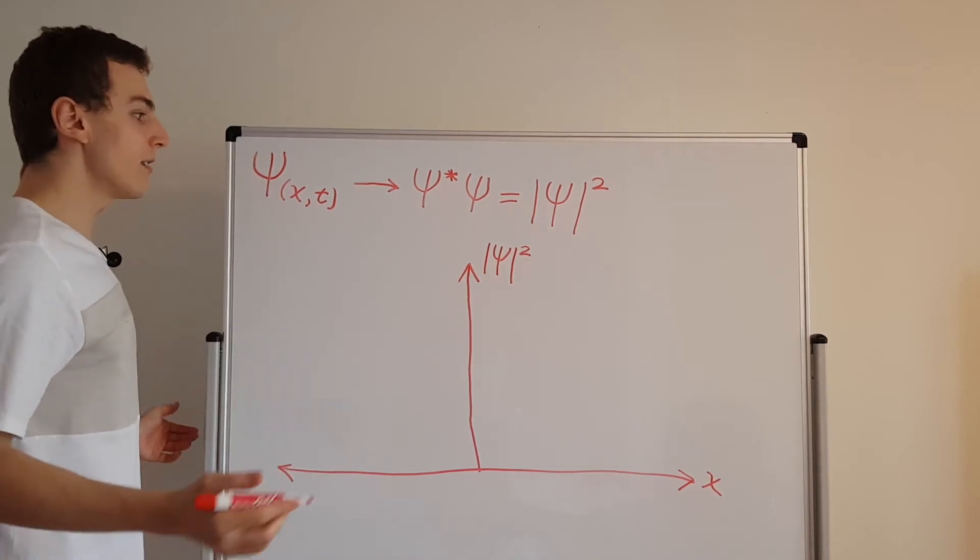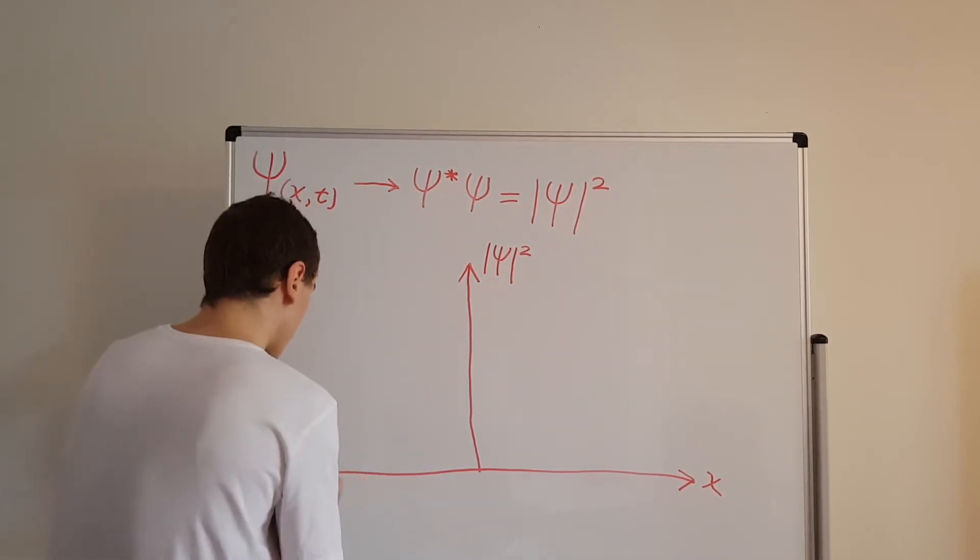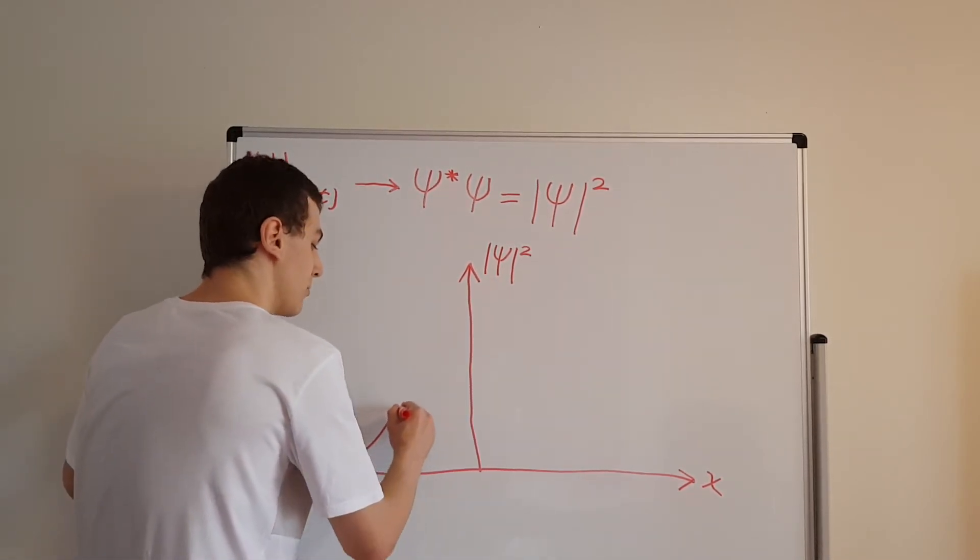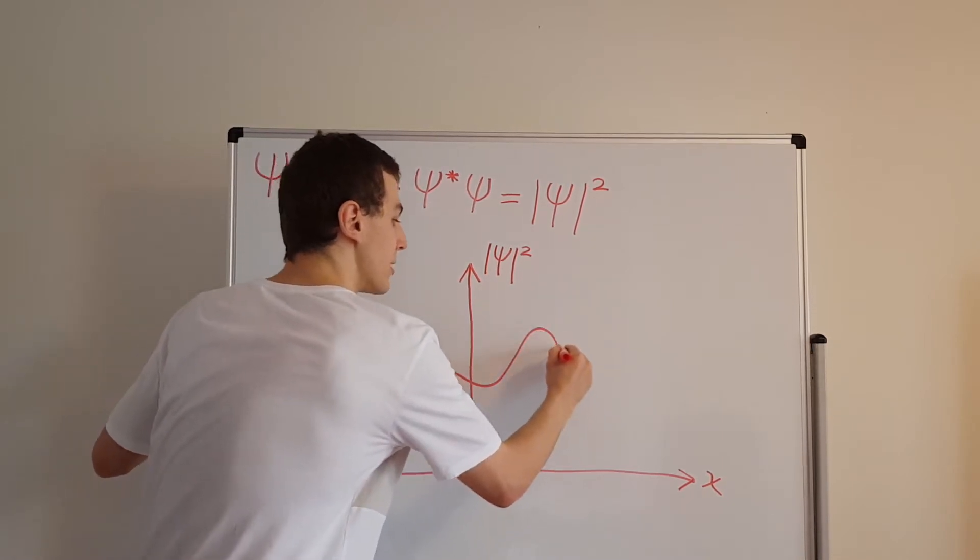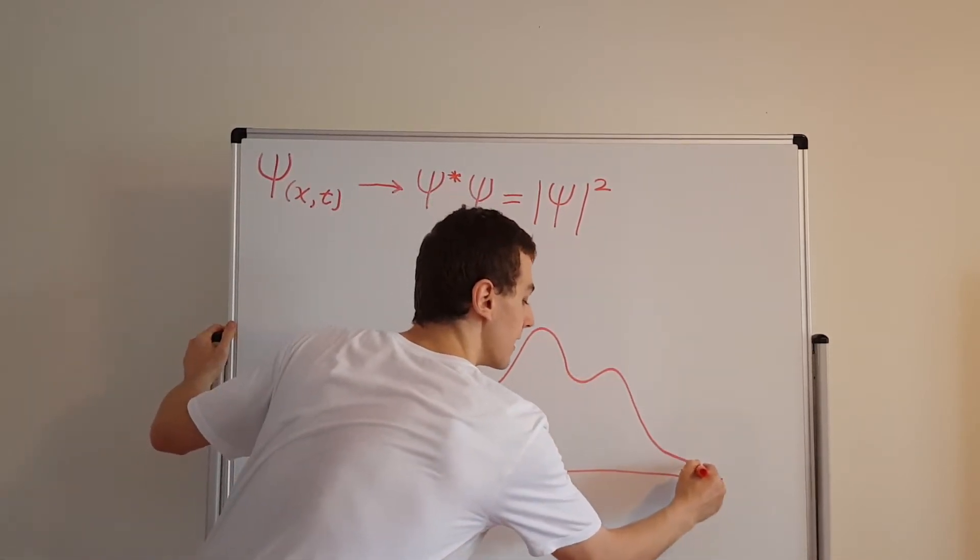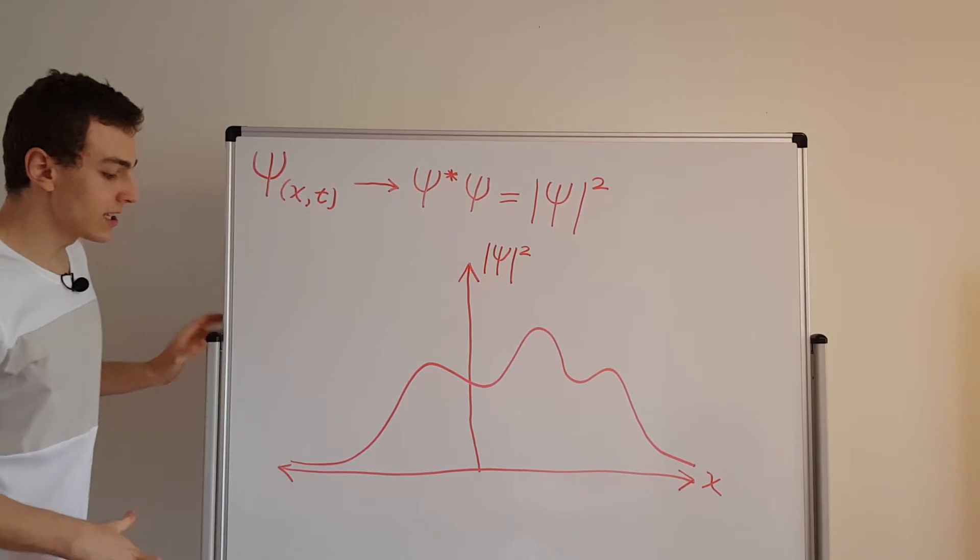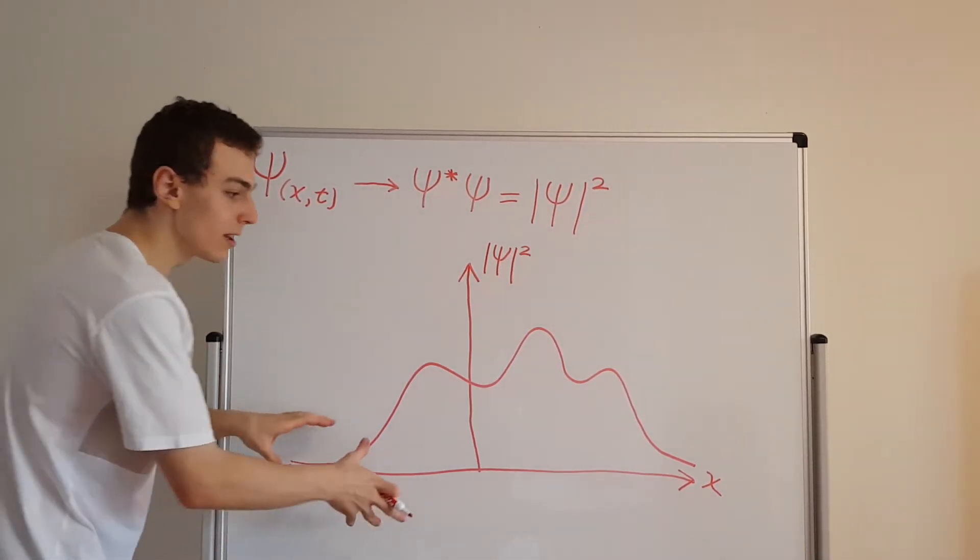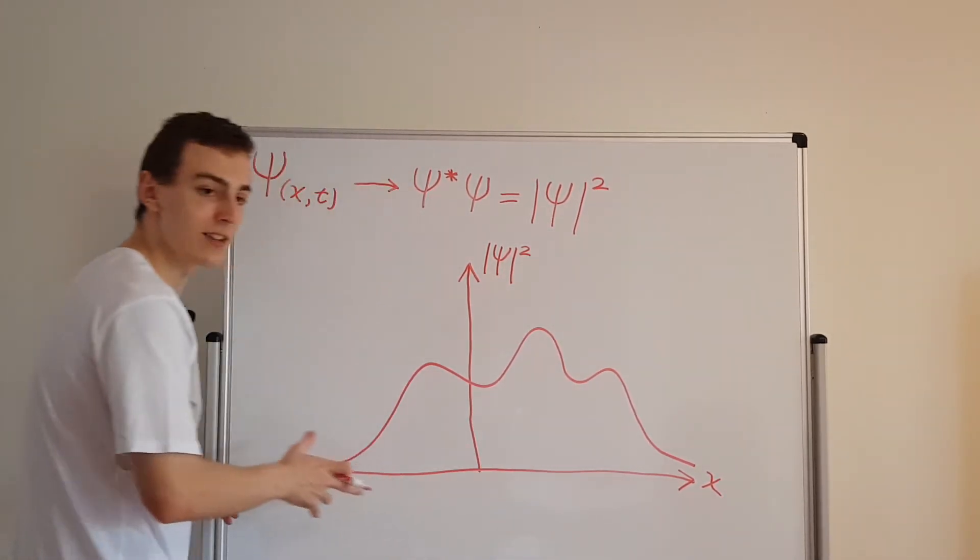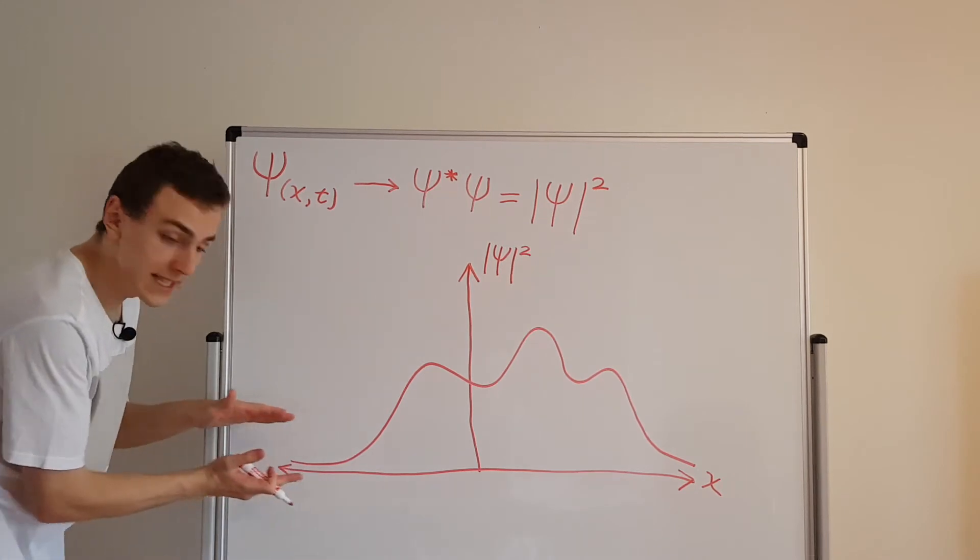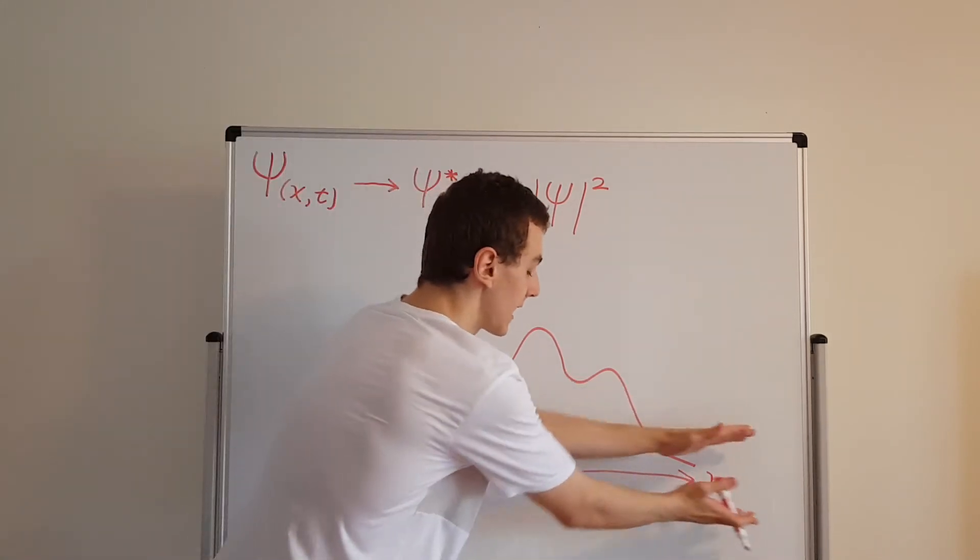So what we can have is some kind of function that tapers off at infinity, but does some interesting stuff here in the middle, and then falls away. So it's not very interesting for really large values of x, or really negative values of x. Out here, it kisses the x-axis, and out here it kisses the x-axis as well.